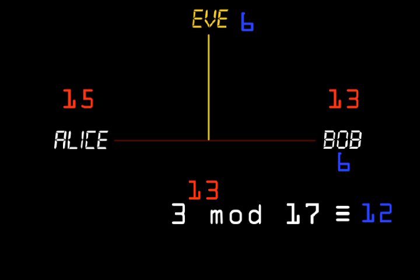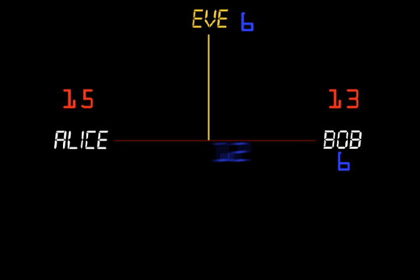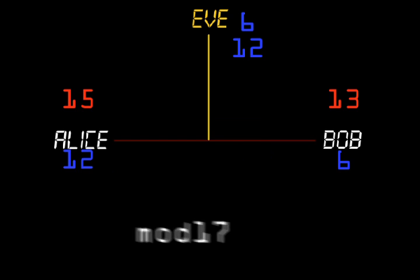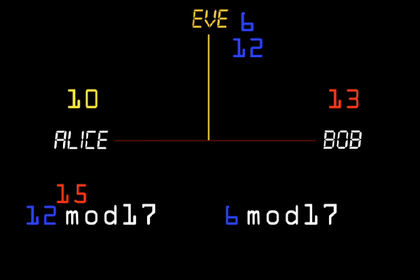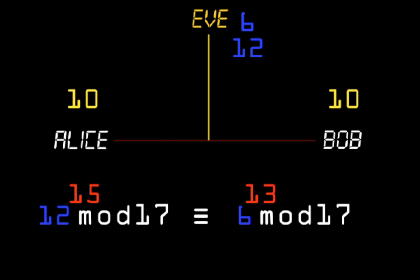And now the heart of the trick. Alice takes Bob's public result and raises it to the power of her private number to obtain the shared secret, which in this case is 10. Bob takes Alice's public result and raises it to the power of his private number, resulting in the same shared secret. Now notice they did the same calculation, though it may not look like it at first.